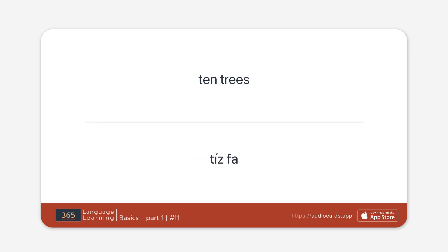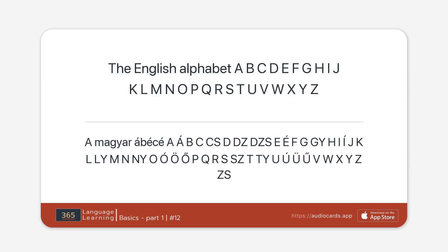Ten trees. The English alphabet: A, B, C, D, E, F, G, H, I, J, K, L, M, N, O, P, Q, R, S, T, U, V, W, X, Y, Z.